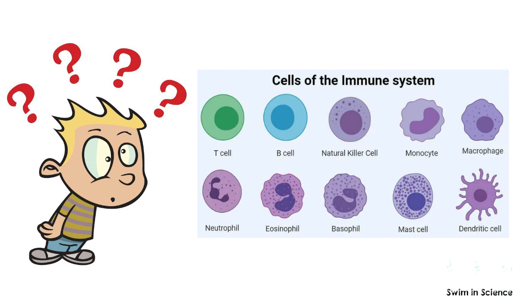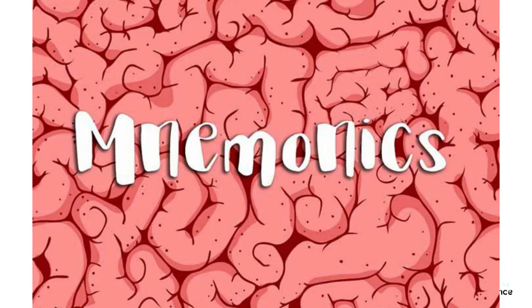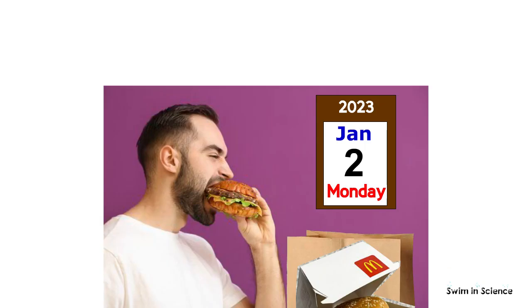It is difficult to remember different cells of the immune system. Here is an easy way to remember the cells of the immune system through mnemonics. Let us try with a simple sentence. Remember this photo for easy understanding.